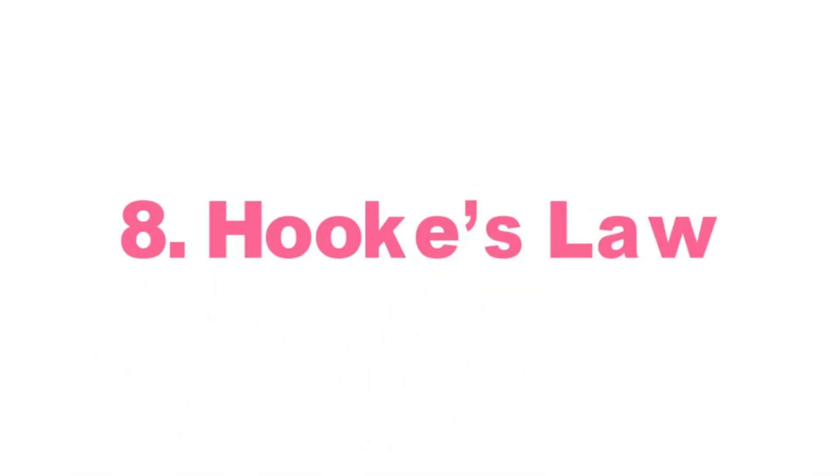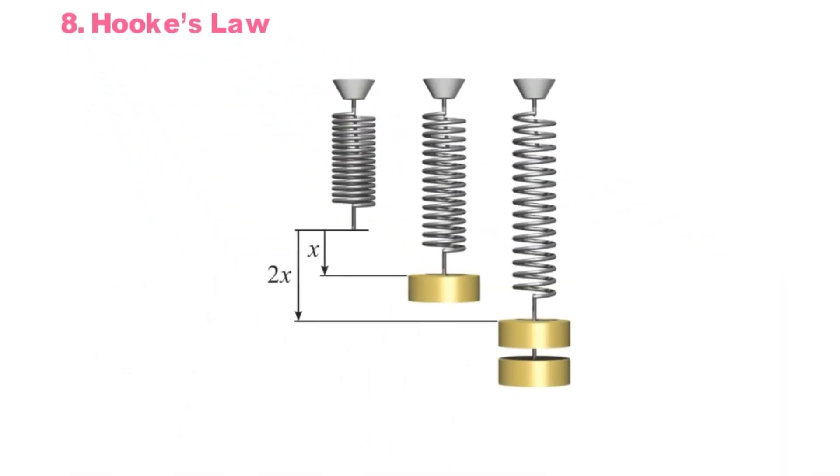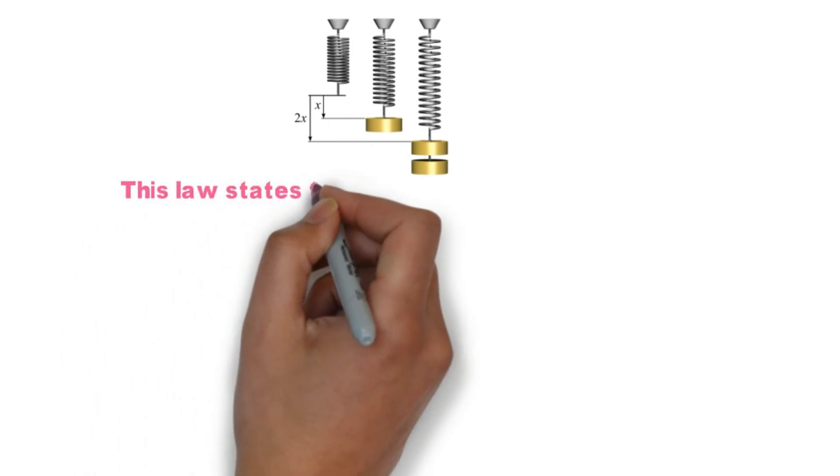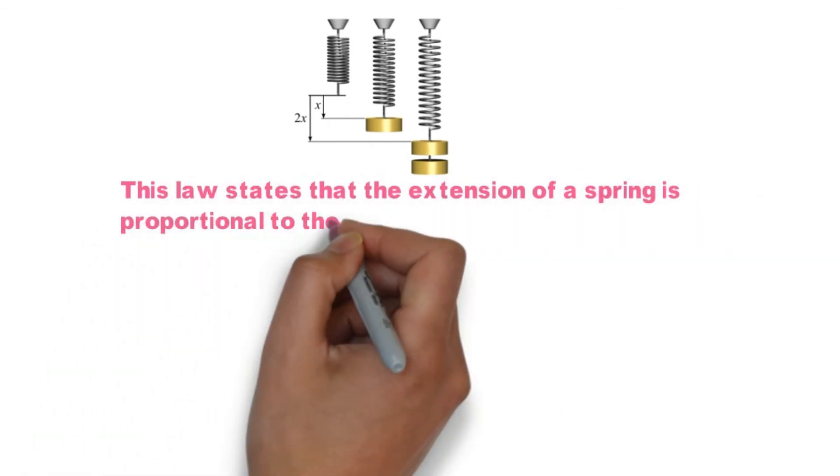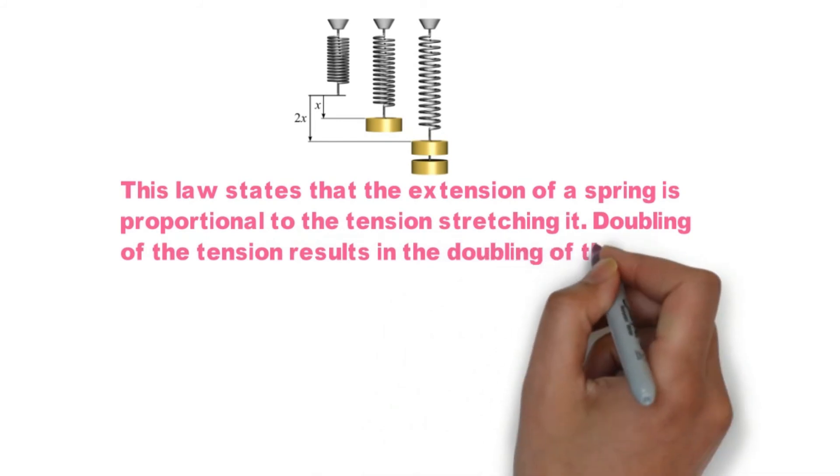Hooke's Law. This law states that the extension of a spring is proportional to the tension stretching it. Doubling of the tension results in the doubling of the amount of stretch.